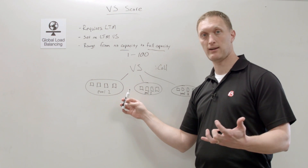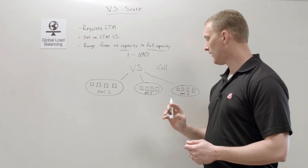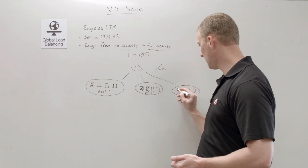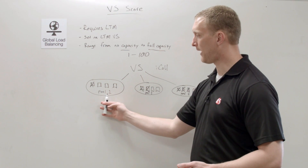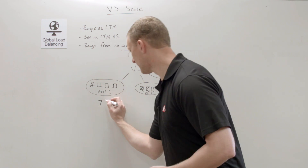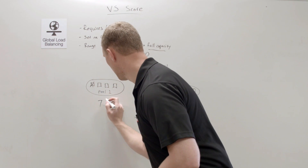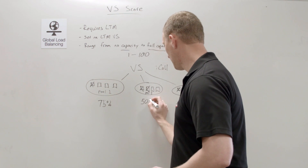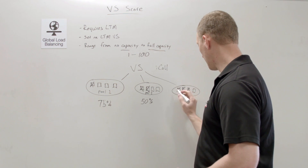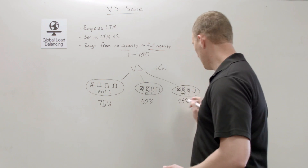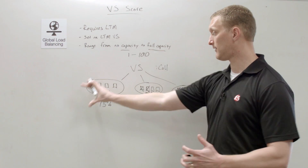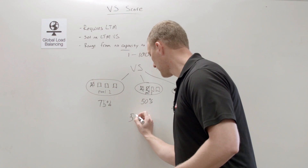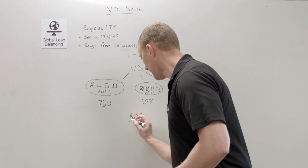Let's say in pool one, one member is down — so that pool is at 75% capacity. In pool two, two members are down — 50% capacity. In pool three, three members are down — 25% capacity. The iCall script calculates each pool's capacity and derives an overall score.